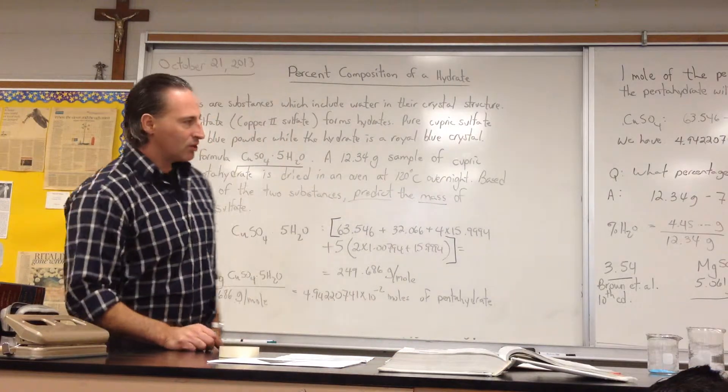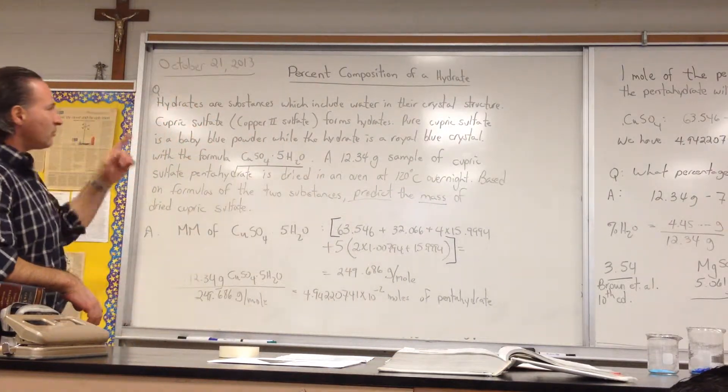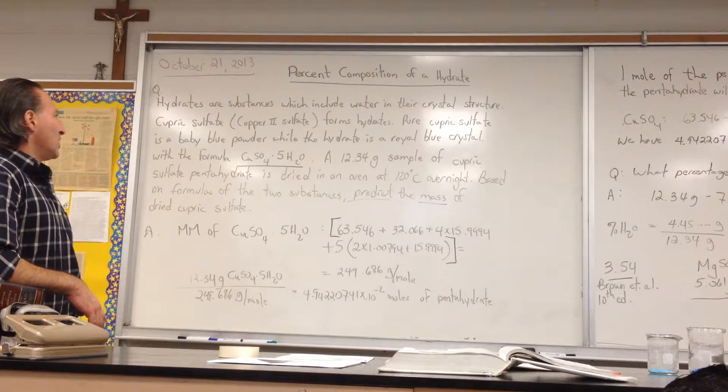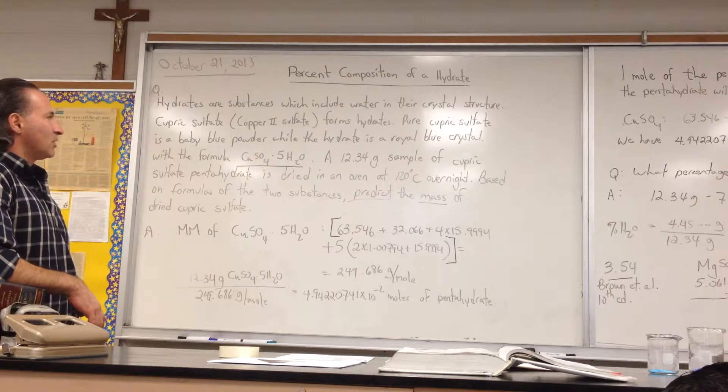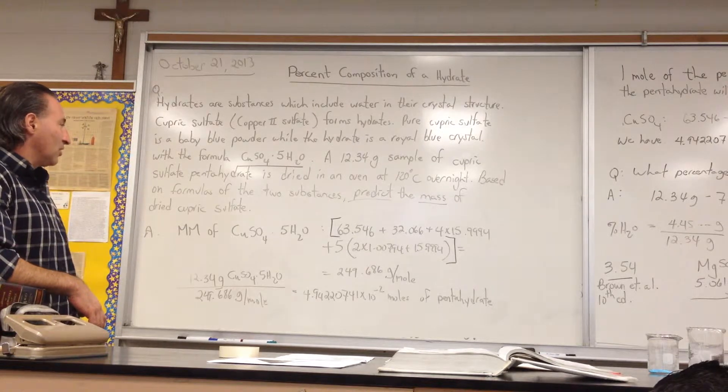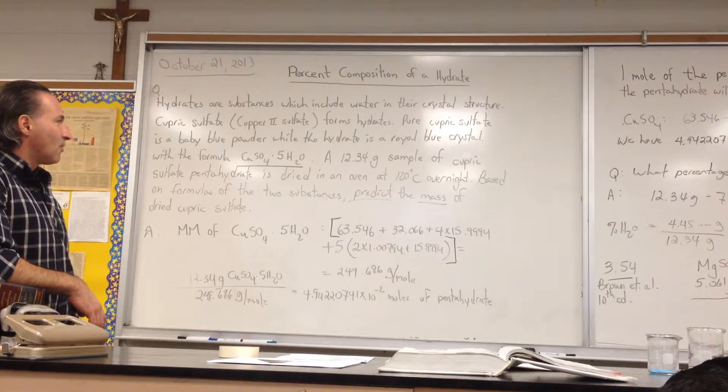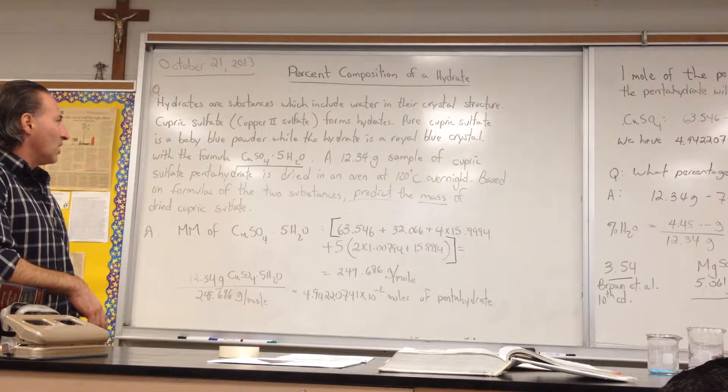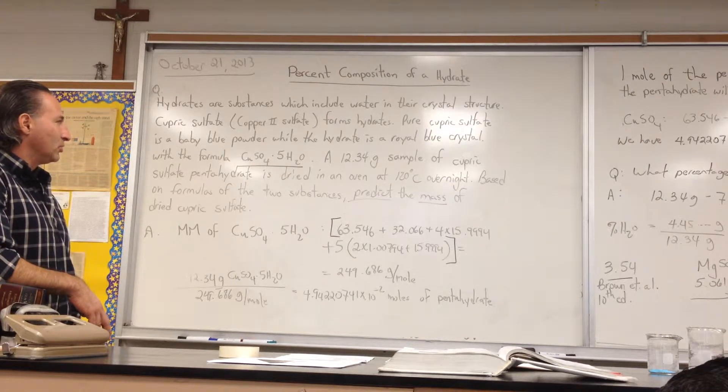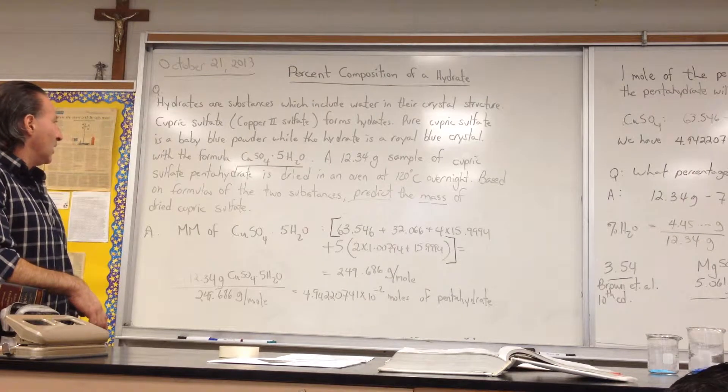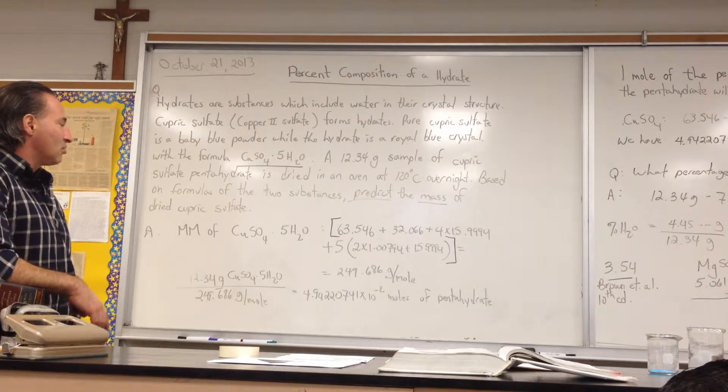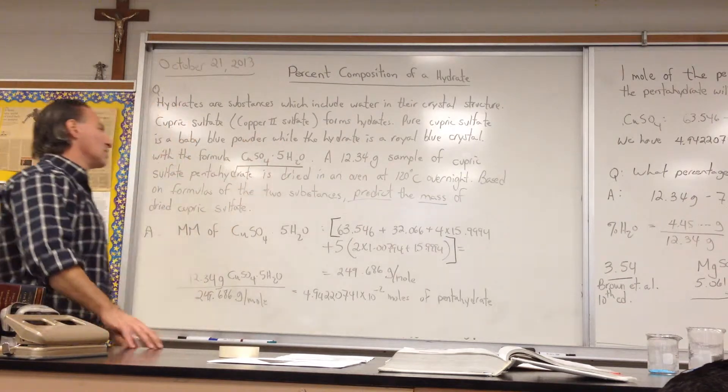So given that, we're going to formulate a problem that involves finding the percent composition of a hydrate. The question says, hydrates are substances which include water in their crystal structure. The cupric sulfate, also known as copper-2-sulfate, forms hydrates. Pure cupric sulfate is a baby blue powder, while the hydrate is a royal blue crystal, like you've seen over there, with the formula cupric sulfate dot 5H2O.